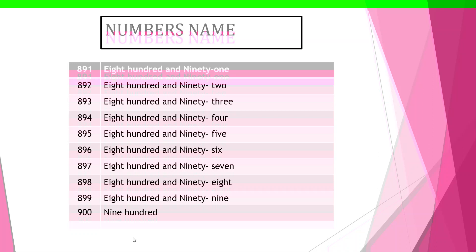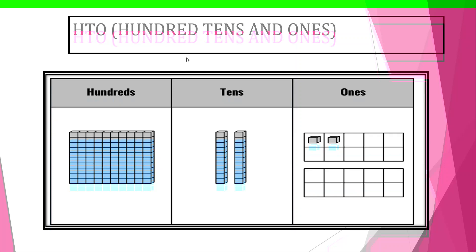You can count all the numbers from 800 to 900. The next slide is the place value of HTO. What is meant by HTO? H is the hundreds, T is the tens, and O is the ones. The hundreds box represents 100 items. There are two boxes for tens — one ten and two tens — each with 10 boxes. You can use particular things like chocolates, ice creams, or balls. The ones are separated numbers attached there.